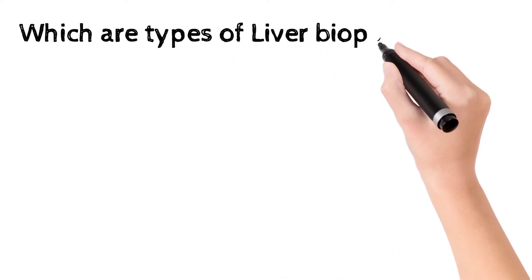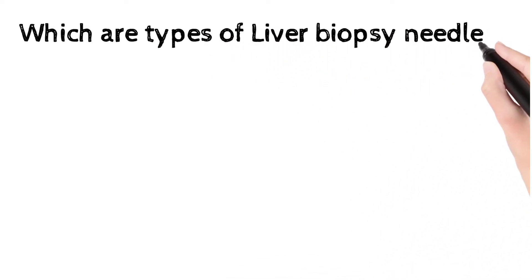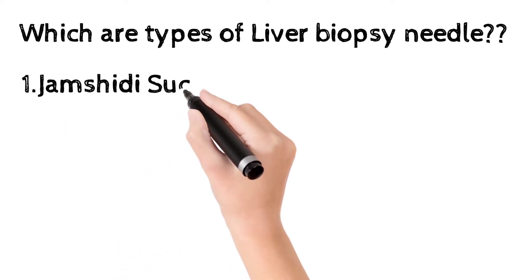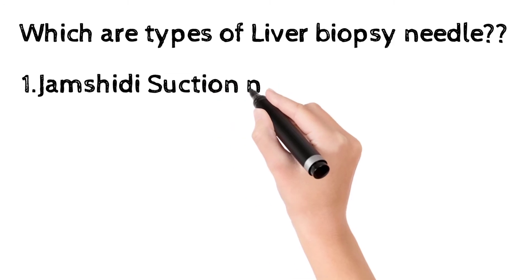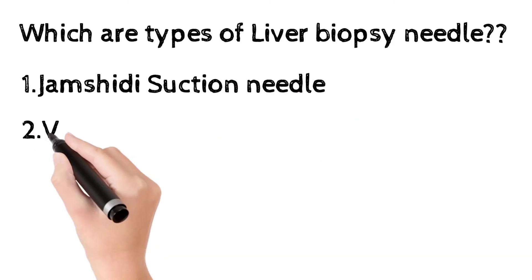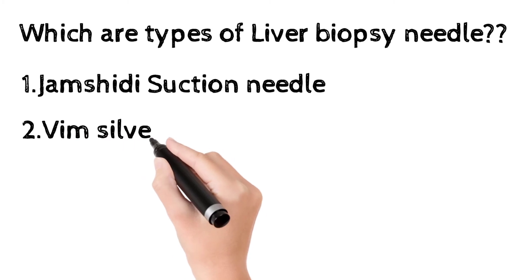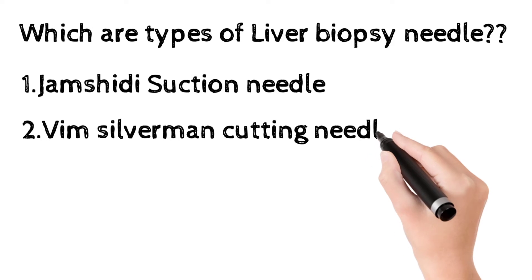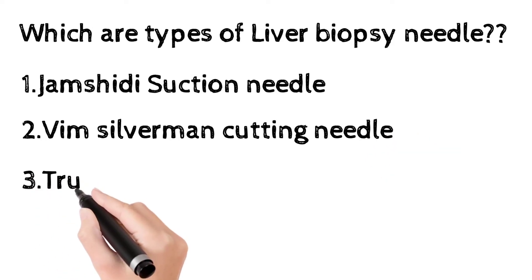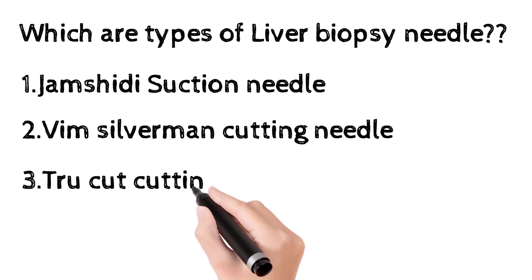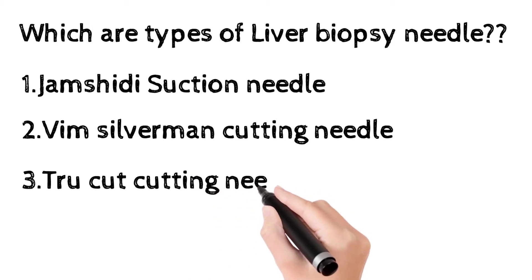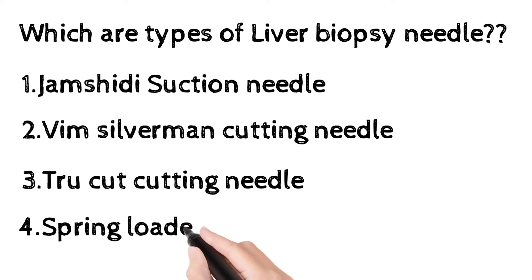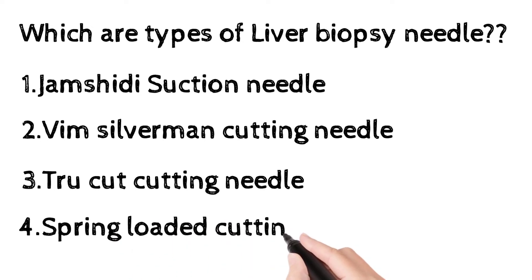There are three main types of liver biopsy needles. The first is the Jamshidi suction needle — its main disadvantage is fragmentation of liver tissue. The second is the Vim Silverman cutting needle, which is today's topic. The third is the Tru-Cut cutting needle, which carries more risk of bleeding during the procedure. The fourth is the spring-loaded cutting needle.